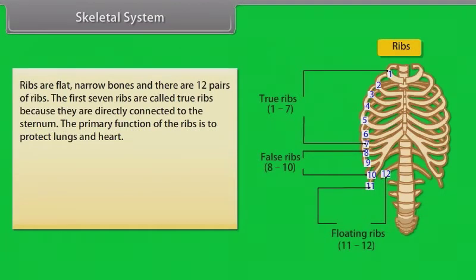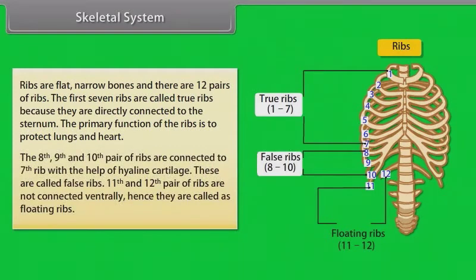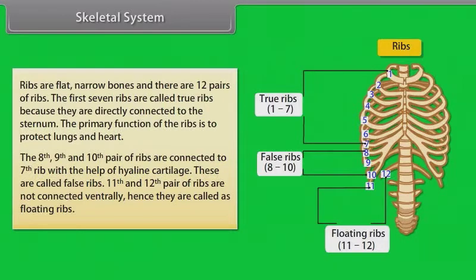Ribs are flat, narrow bones, and there are 12 pairs. The first 7 ribs are called true ribs because they are directly connected to the sternum. The primary function of the ribs is to protect the lungs and heart. The 8th, 9th, and 10th pairs of ribs are connected to the 7th rib with hyaline cartilage and are called false ribs. The 11th and 12th pairs are not connected ventrally and are called floating ribs.